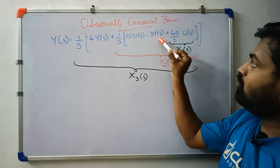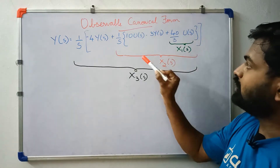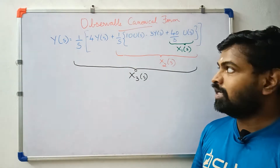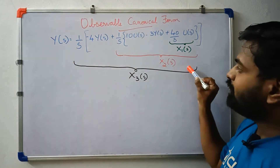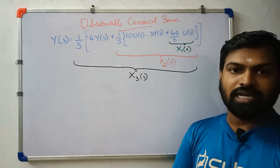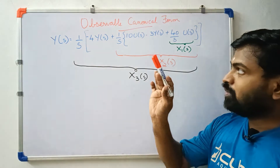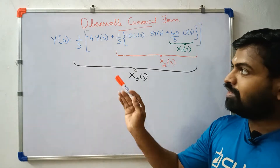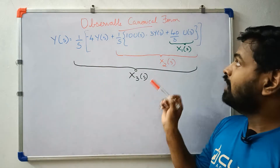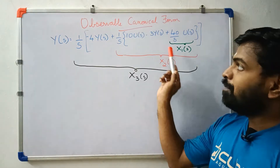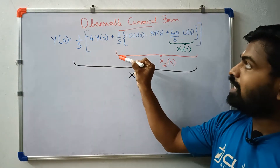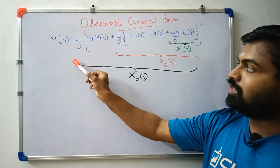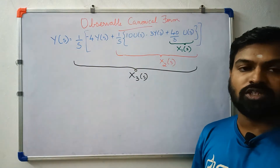We identify x1(s), x2(s), and x3(s) as state variables. We divide the equation into 3 parts: x1(s) pin, x2(s) pin, and x3(s) pin — each defined by 1 over s times the corresponding expression.